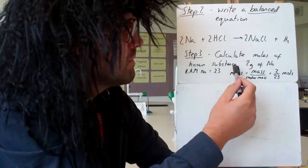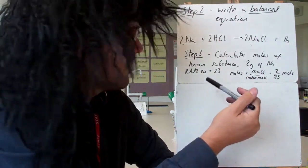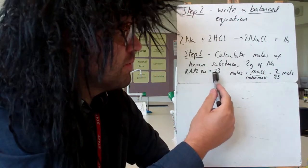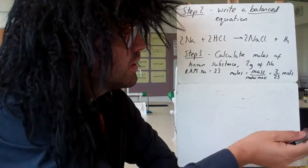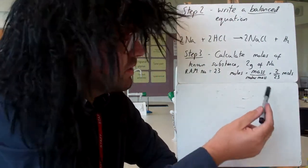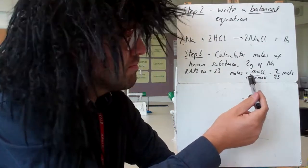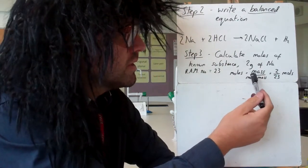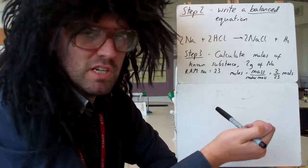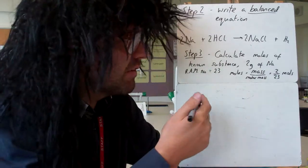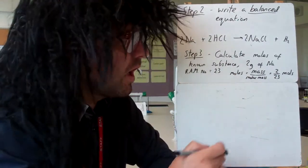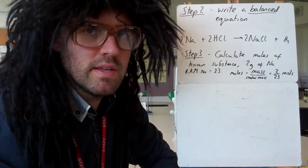Step three: calculate the moles of the known substance. We've got 2 grams of sodium. The relative atomic mass of sodium is 23, so moles is mass over molar mass, so it's 2 over 23. This is just a case of using moles equals mass over molar mass. I'm leaving it as a fraction at the moment so I don't have to do too much rounding before I get to the final answer.